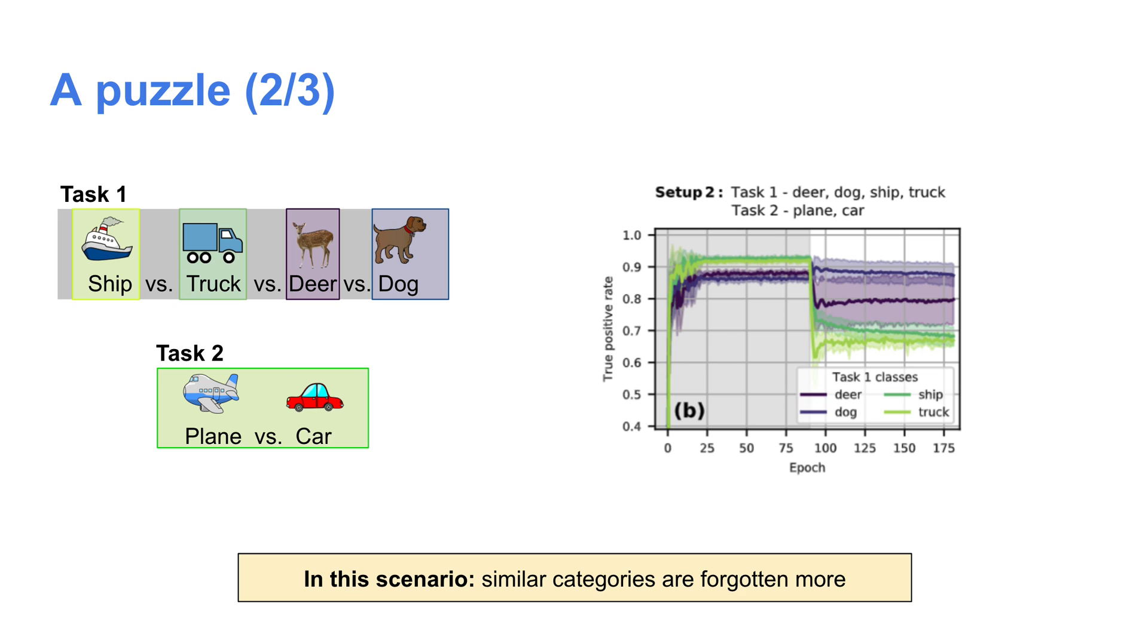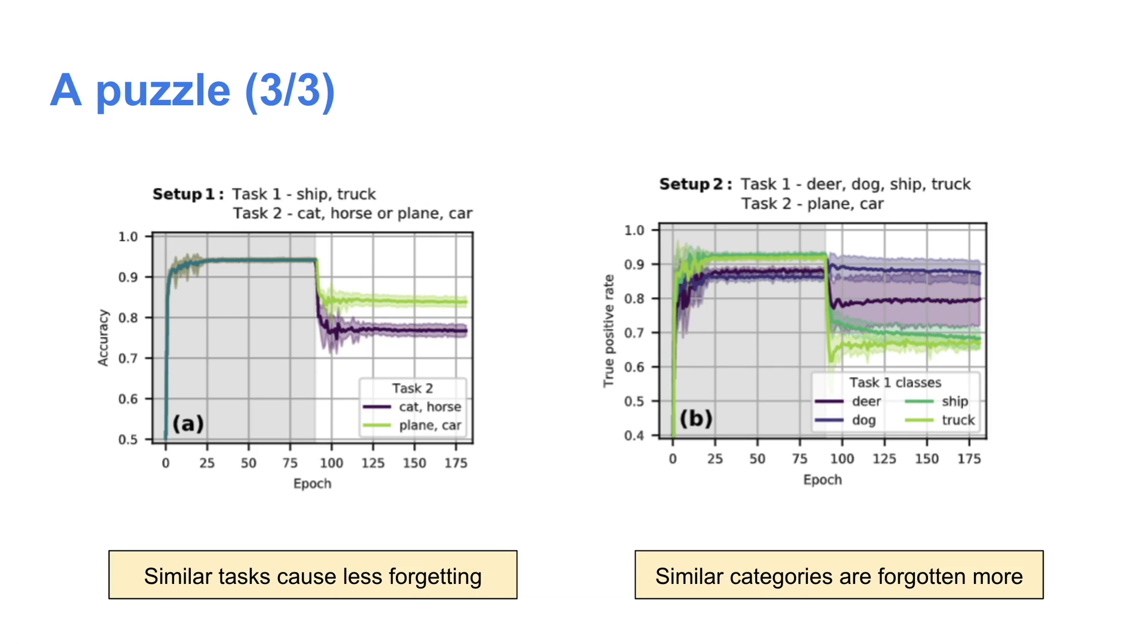If you look at the graph to the right, you can see that the forgetting seems to cause a large drop in the network's ability to recognize the vehicles compared to the animals. So in this scenario, it seems like categories similar to those found in the second task are forgotten more than categories dissimilar from the second task.